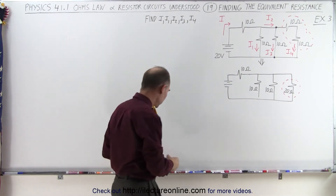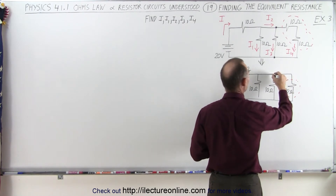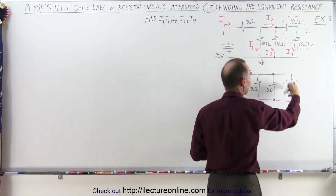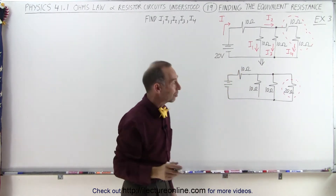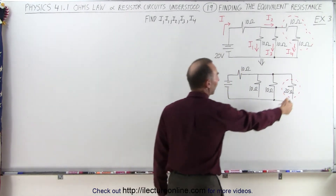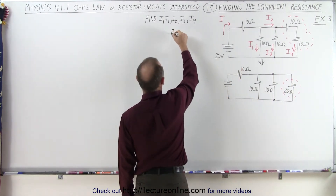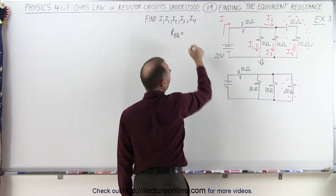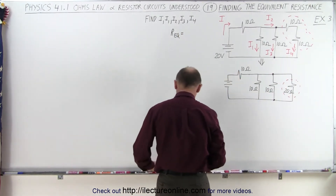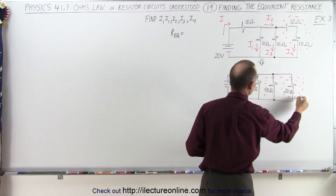The next step is to take these two resistors here, because they are between this branch point and this branch point. We have the same branch points, but now we have one single resistor in each of the two branches. So we're going to use the product over sum method to find the equivalent resistance, and combine these two into a single resistor.